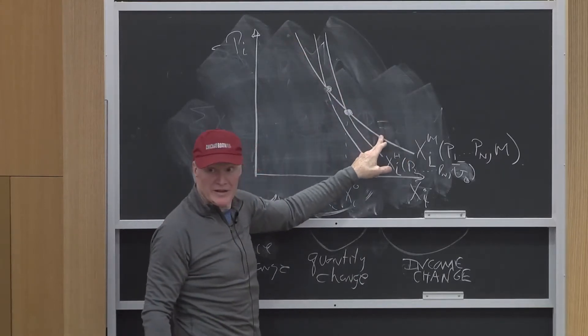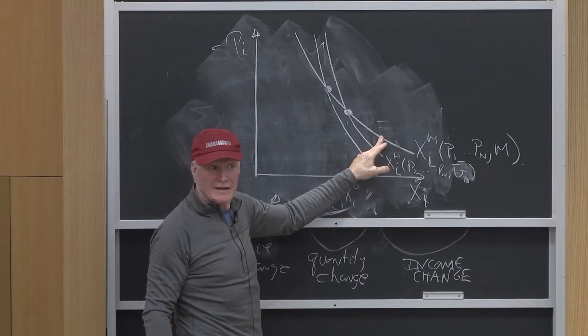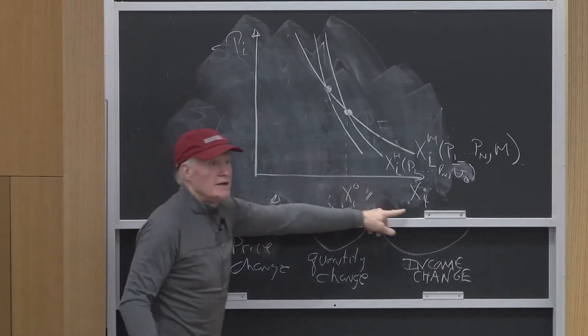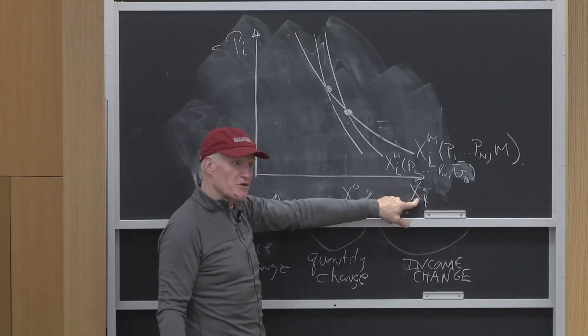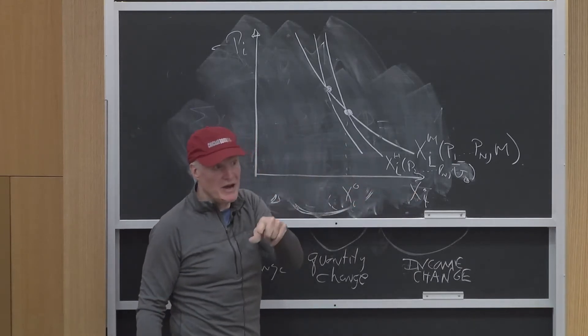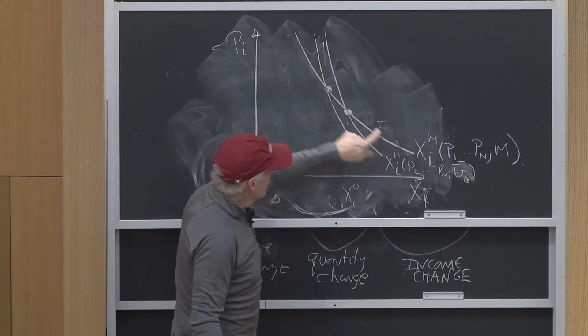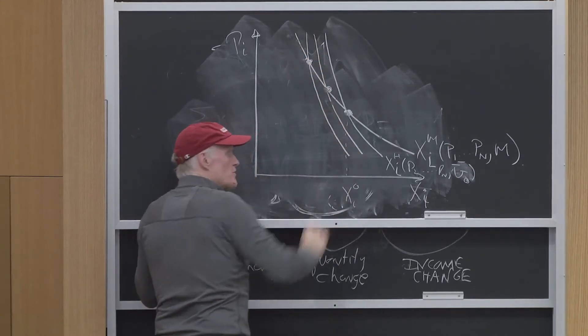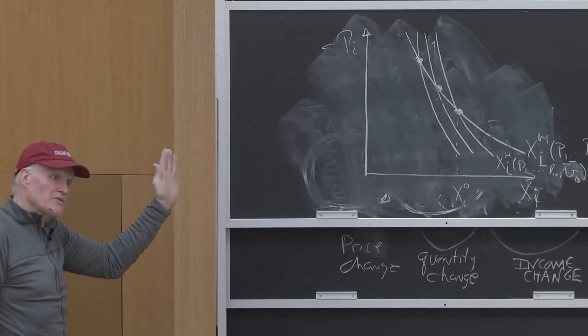Student asks: Can you talk about the budget constraint? I'm confused. There is no budget constraint. This is price and quantity, the relationship between the price of good I and consumption of good I. That's what a demand curve is. The demand curve says, tell me your price and I'll tell you how much you buy.